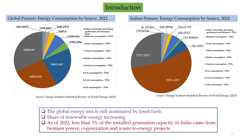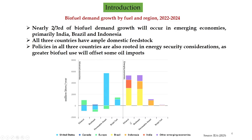Since our discussion is on biomass conversion or bioenergy, we will be emphasizing more on bioenergy's share in the energy mix. As of 2020, less than 3 percent of installed generation capacity in India came from biomass power, cogeneration, and waste-to-energy projects. As far as biofuel demand growth is concerned, in the projection for 2022 to 2024, nearly two-thirds of biofuel demand growth will occur in emerging economies like India, Brazil, and Indonesia. All three countries have ample domestic feedstocks, and policies in all three countries are rooted in energy security considerations, as greater biofuel use will offset some oil imports.